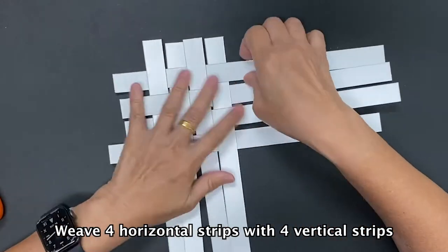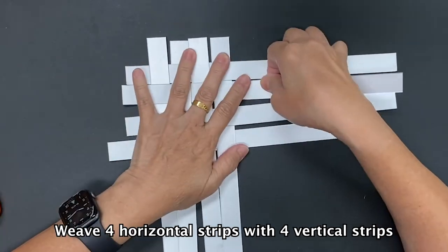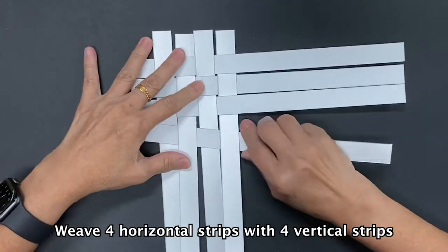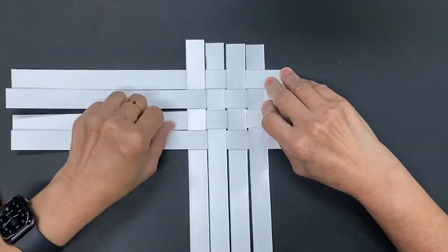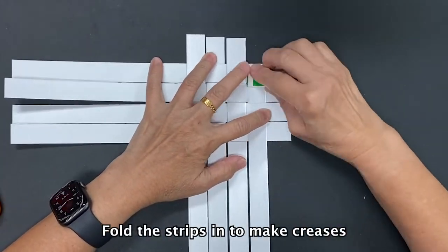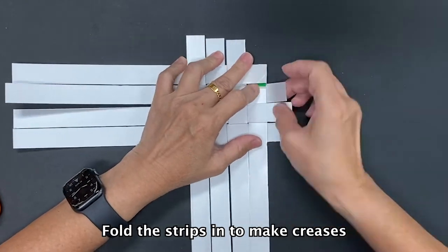Weave 4 horizontal strips with 4 vertical strips. Fold the strips in to make creases.